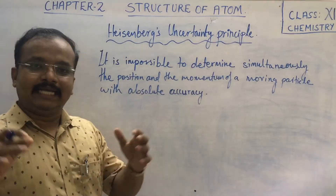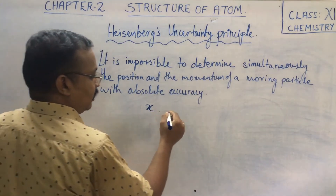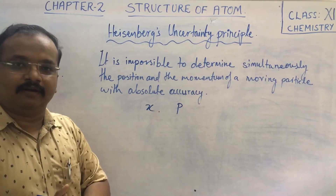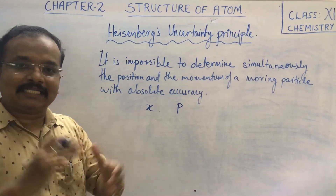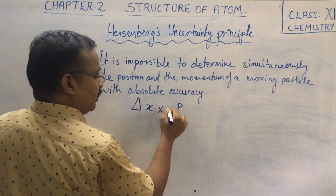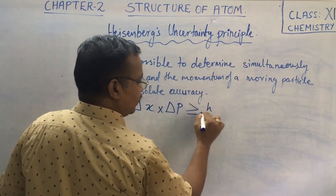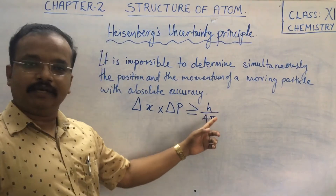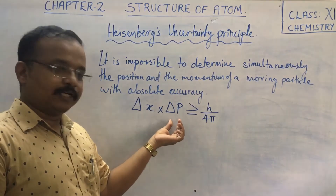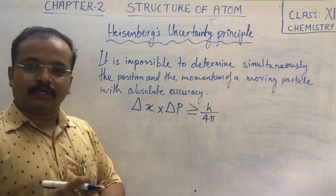The position and momentum of a moving particle cannot both be determined with absolute accuracy simultaneously. Mathematically, delta x — the change in position — multiplied by delta p — the change in momentum — is greater than or equal to H over 4 pi. Here H is Planck's constant and pi equals 3.14.